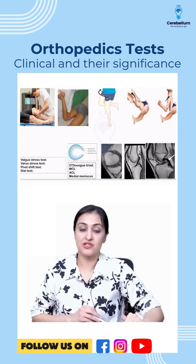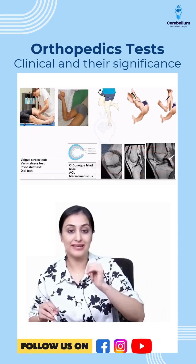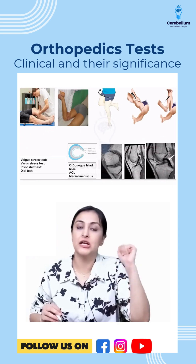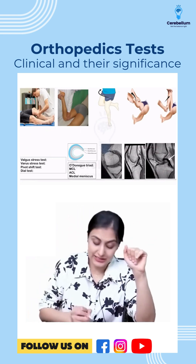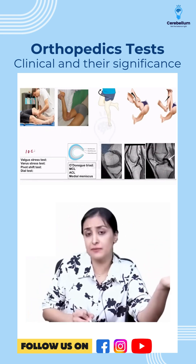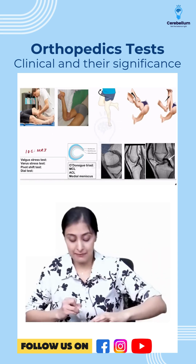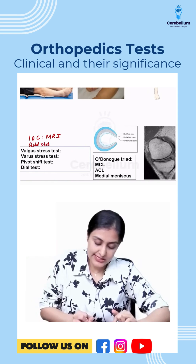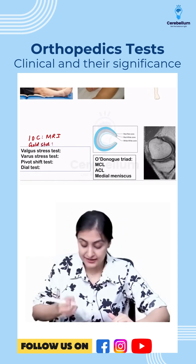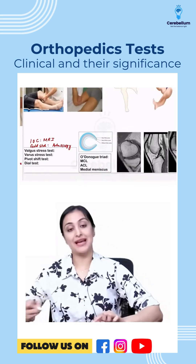We are going to talk about sports injuries briefly. First I'll show you the ligaments on an MRI, and then we'll see the clinical tests. For any ligaments in general, the investigation of choice remains MRI. If they ask you gold standard — gold standard is something which is diagnostic and therapeutic — that is always going to be arthroscopy. So arthroscopy and MRI.